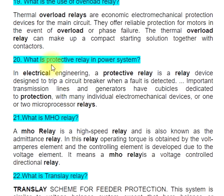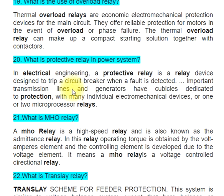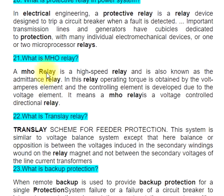Question 20: What is a protective relay in a power system? In electrical engineering, a protective relay is a relay device designed to trip a circuit breaker when a fault is detected. Important transmission lines and generators have cubicles dedicated to protection, with many individual electromechanical devices or one or two microprocessor relays.